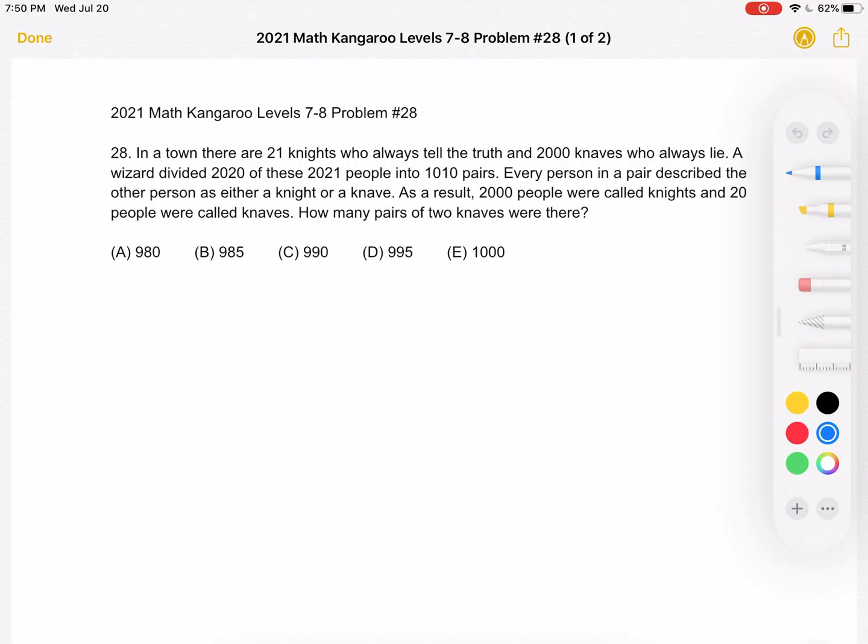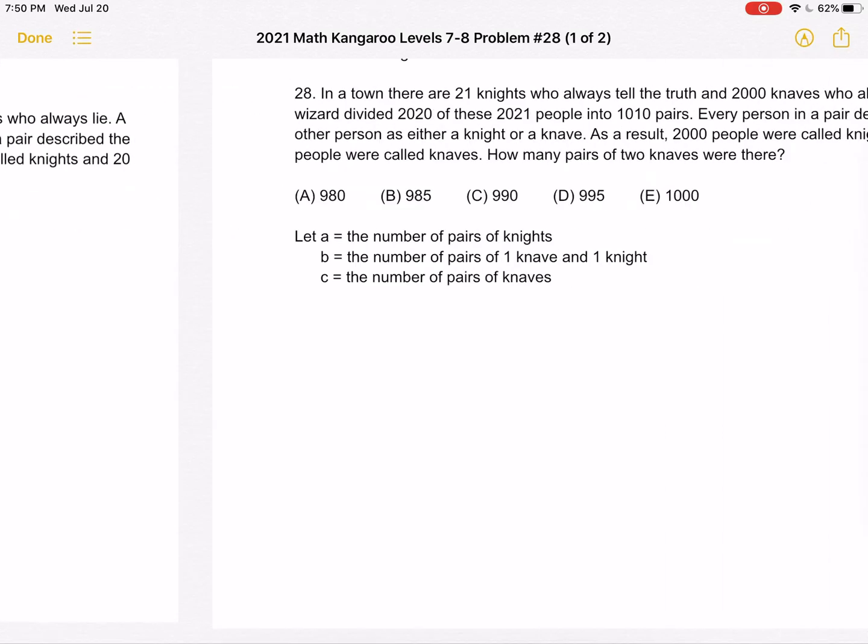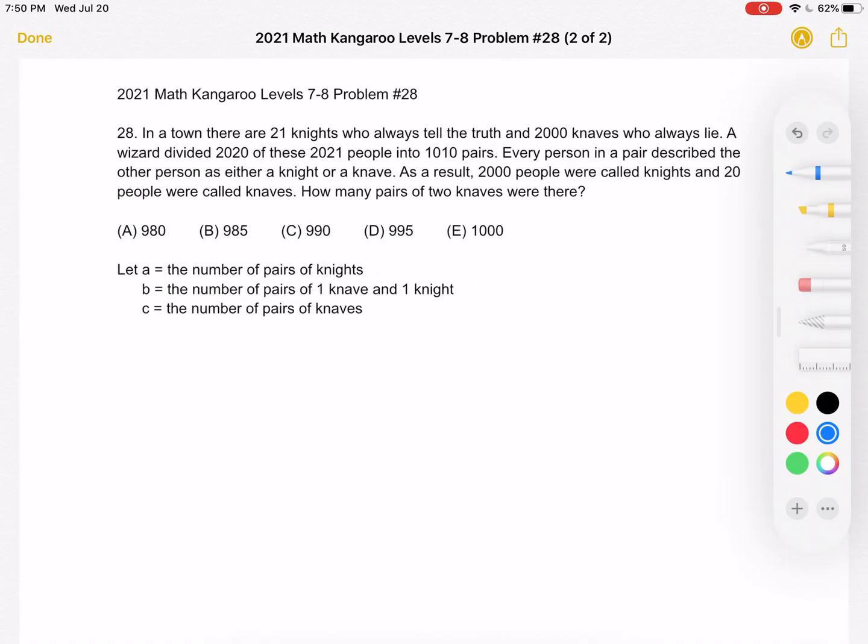The answer choices are: A 980, B 985, C 990, D 995, or E 1000. To start, I've defined three variables. Let A equal the number of pairs of knights. Let B equal the number of pairs made up of one knave and one knight, and let C equal the number of pairs of knaves. So those are the three different types of pairs we could have.